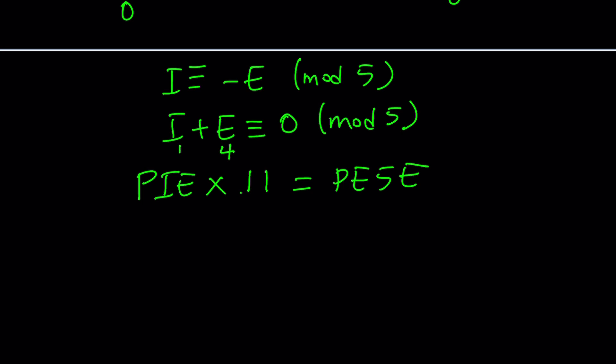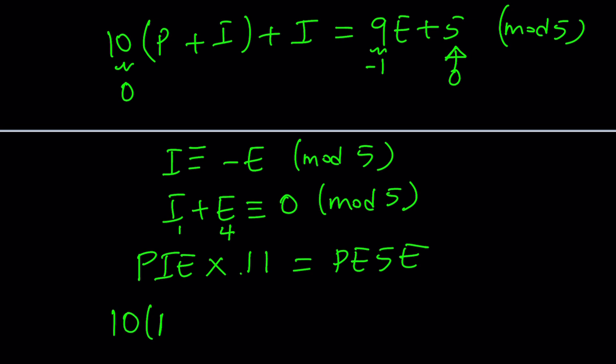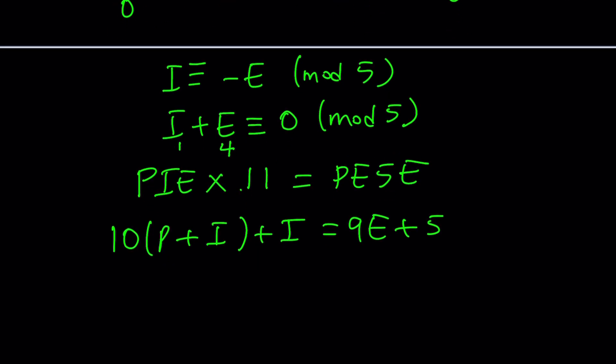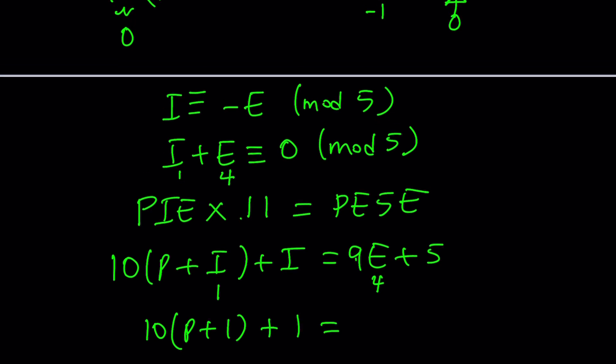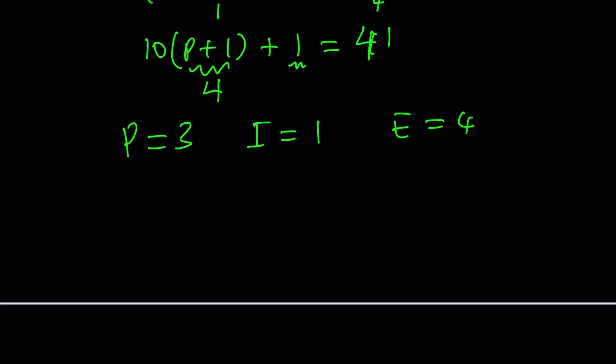Here's the thing. If that is the case, let's say we take I to be 1 and E to be 4. We're going to get 10(P + 1) + 1 = 9(4) + 5, that's going to be 41. And that works because notice that we want this to end in 1, right? Obviously that makes sense. So we could use modular arithmetic even more, but this tells me that this must be a 4, therefore P equals 3. So P = 3, I = 1, and E = 4 work, which means our three-digit number PIE is 314.